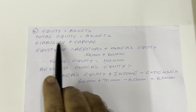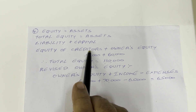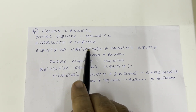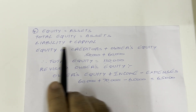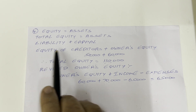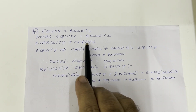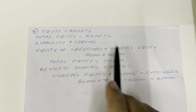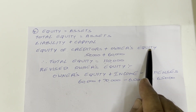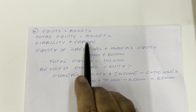In the question, in the place of liability, he is using the word equity of creditors. Creditors means outsiders. So if we take a loan from outsiders, it comes under liability. So in place of liability, the question gives equity of creditors. Similarly, capital — who brings capital? The owner only. So capital is also known as owner's equity, and in the question he used this word: owner's equity.